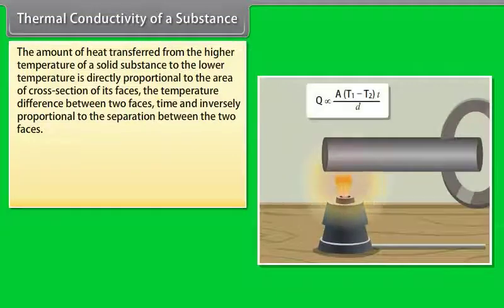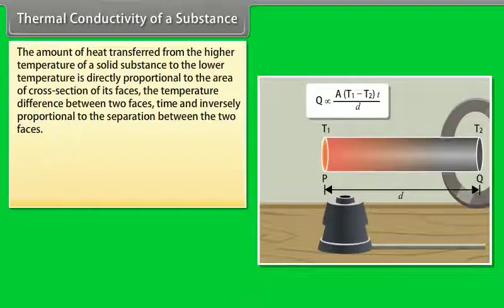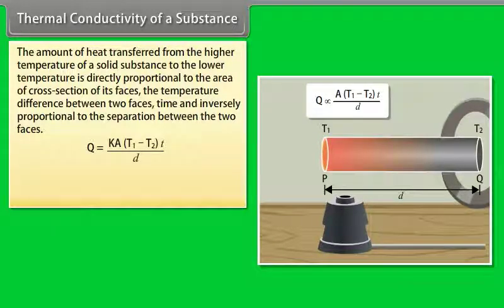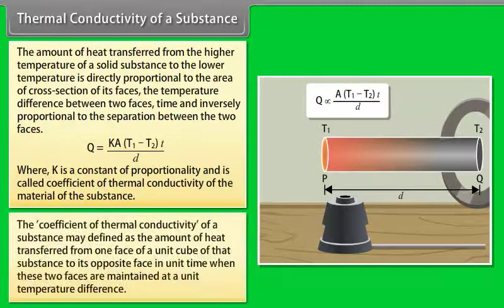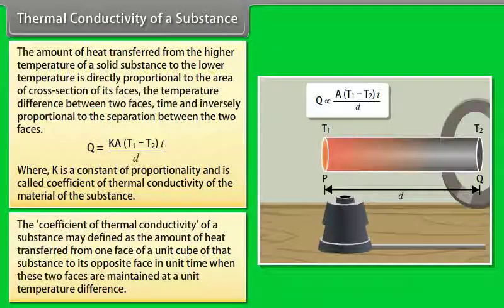Thermal conductivity: The amount of heat transferred is directly proportional to the area of cross-section, the temperature difference between the two faces, and time, and inversely proportional to the separation between the two faces. This gives Q = KA(T1 − T2)t/d, where K is the coefficient of thermal conductivity. The coefficient of thermal conductivity is defined as the amount of heat transferred from one face of a unit cube to the opposite face in unit time when the two faces are maintained at a unit temperature difference.